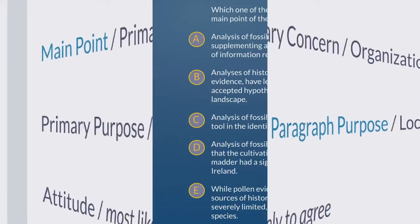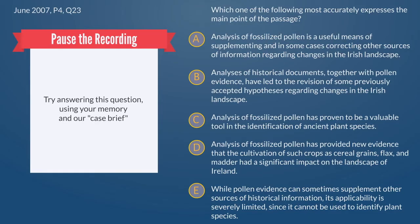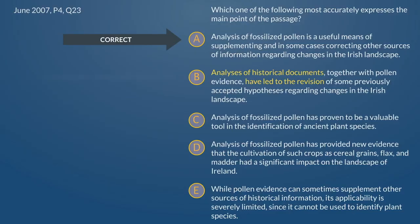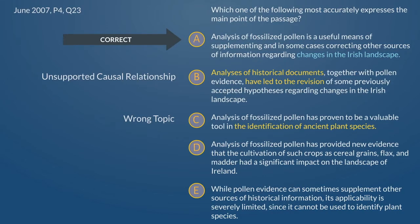Pause the recording and try to do this one from memory. Then unpause when you want to review it. Welcome back. Choice A is our correct answer here. Choice B — the main clause says that historical documents have led to the revision. This passage was not about documents doing stuff; it was about pollen picking up some of the slack for documents. C starts out just like A: 'Using pollen is a valuable, useful tool to do...' Here it says to identify ancient plant species, whereas A said to trace the changes of the Irish landscape.